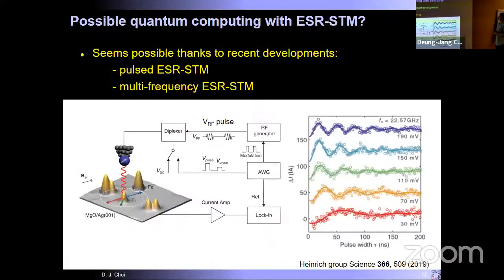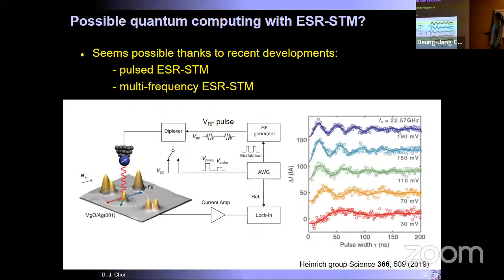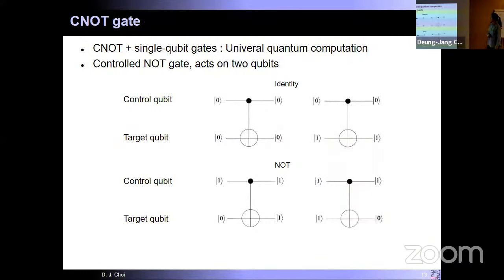Is it possible to do quantum computation using the ESR-STM? The answer is yes, thanks to recent developments in pulsed ESR-STM and multi-frequency ESR-STM. The Ienaga group showed that using an arbitrary waveform generator, they can chop the duration of RF voltage pulses — introducing pulsed ESR-STM — and by sending different pulse durations, they managed to directly measure Rabi oscillations as well as the coherence time. To perform universal quantum computation, we need a CNOT gate and single-qubit gates.